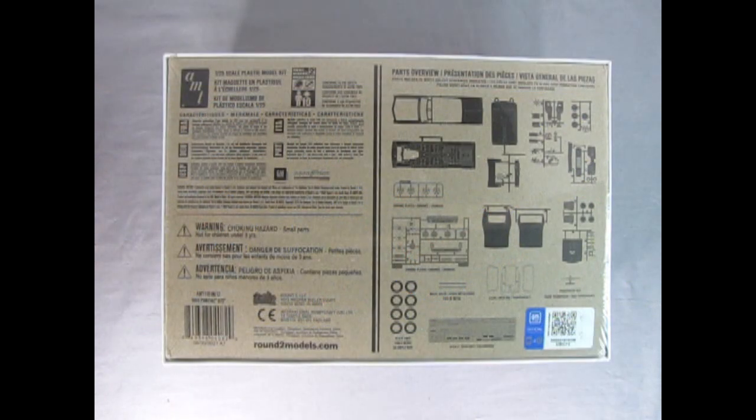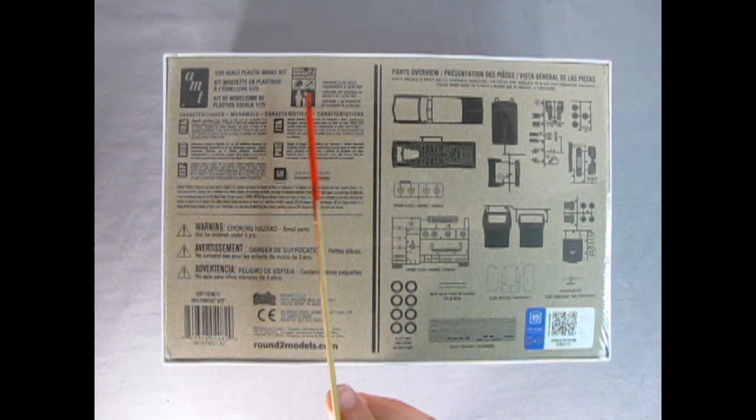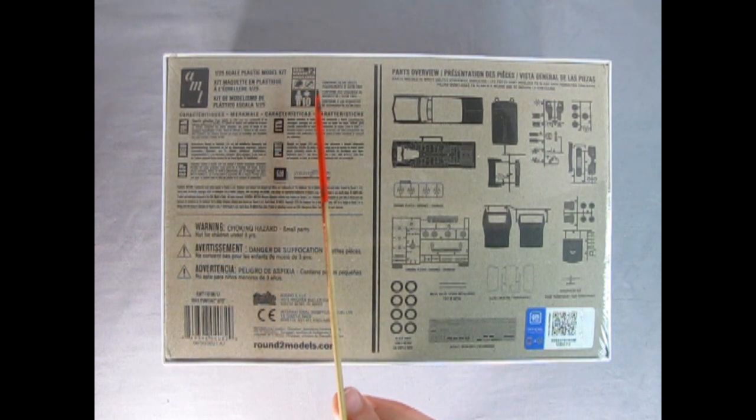The bottom of the box shows a wonderful parts breakdown which is really awesome and a good thing from Round 2. We also get this wonderful QR code. Have any of you actually clicked on these with your camera and see where they lead to? I never really get a chance to. I see that GM has also updated its logo for the 2020s. And then here we also have our Round 2 logo. And this model kit is for ages 10 and up and will require glue and paint.